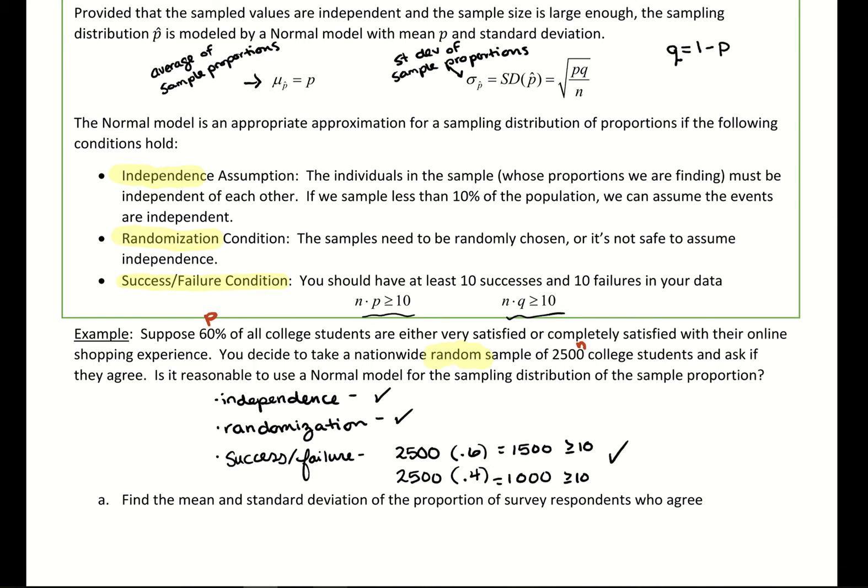So in terms of showing work with these, independence and randomization kind of assume, but show your work for success failure because it's basically proof that we can move forward, proof that we have a bell-shaped curve. So once we pass those three conditions, I know my distribution is going to be bell-shaped.